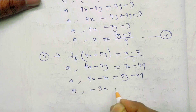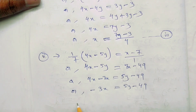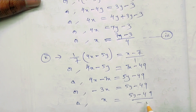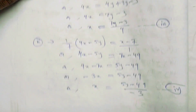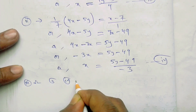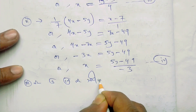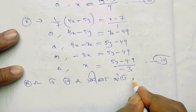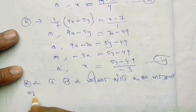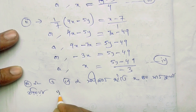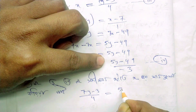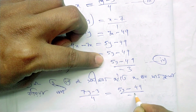4x minus 7x equals minus 3x. So 5y minus 1. So x equals 5y minus 1 divided by 3. This is equation 4. So this is 5y minus 4. So this is 5y minus 6. So this is 5y minus 3 by 4, minus 3.